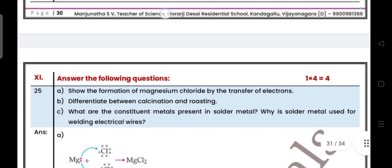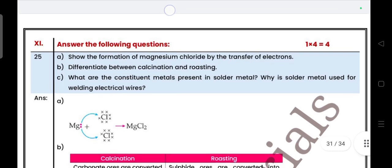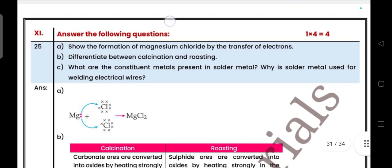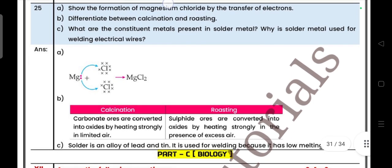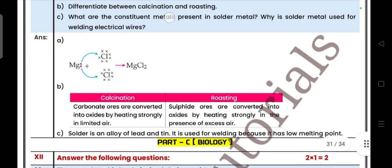Next, four mark question: Show the formation of magnesium chloride by transfer of electrons. Difference between calcination and roasting. What are the constituent metals present in solder metal? Why is solder metal used for welding electric wires?